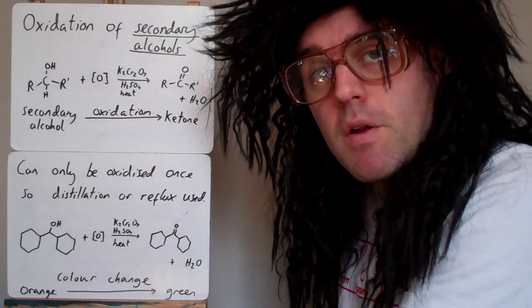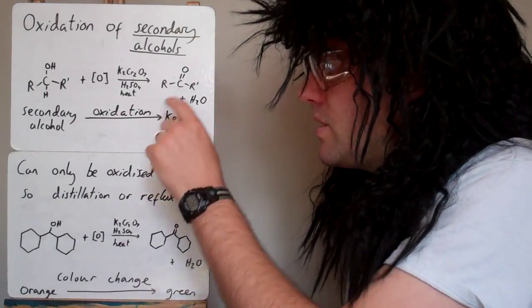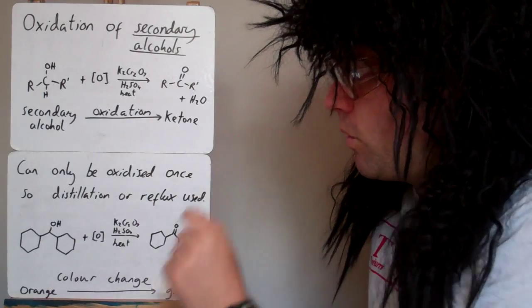The ketone is similar to the aldehyde, except there's no hydrogen on the carbon with the double bond O. So it's never at the end of a chain, it's always somewhere in the middle. We also produce a molecule of water.